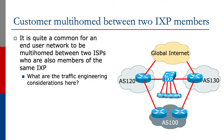The next example we're going to look at is the case where we have a customer, or end site, multi-homed between two ISPs who are members of an Internet Exchange Point. This is quite a common situation where the end user network is multi-homed for redundancy purposes or for load balancing purposes. The diagram shows the situation and we have to look and see what the traffic engineering considerations are required for this particular setup.